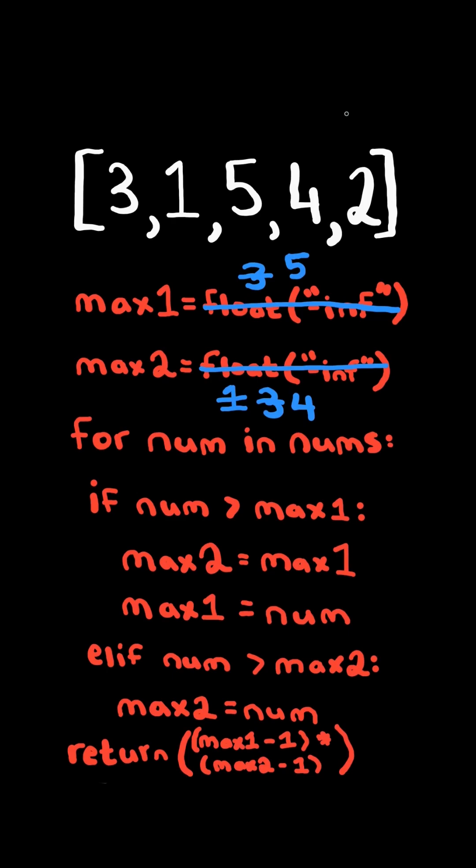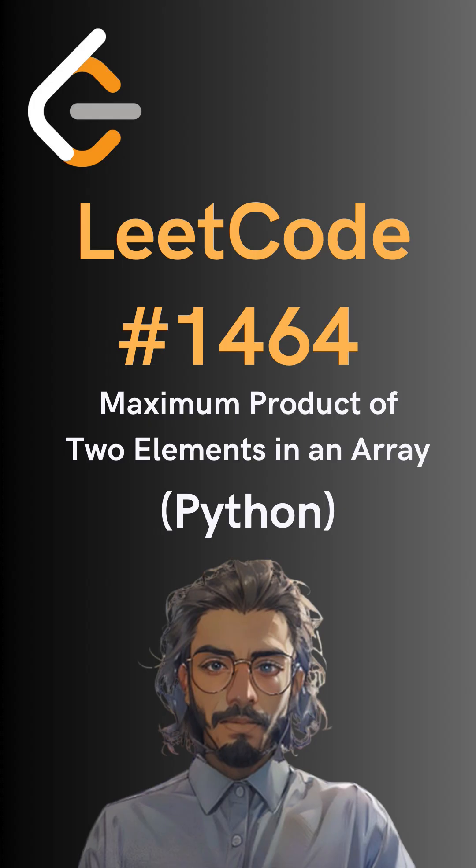At the end, we return the product of max1 and max2, subtracted by 1. Here's the code to do so. Please like and follow for more.